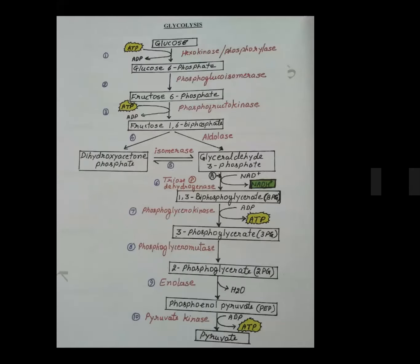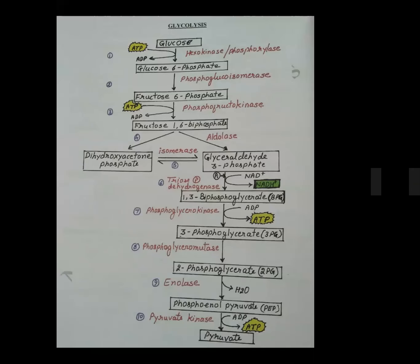The intermediates of glycolysis are: glucose-6-phosphate, fructose-1,6-bisphosphate, dihydroxyacetone phosphate, glyceraldehyde-3-phosphate, 1,3-bisphosphoglycerate, 3-phosphoglycerate, 2-phosphoglycerate, phosphoenolpyruvate, and finally pyruvate.